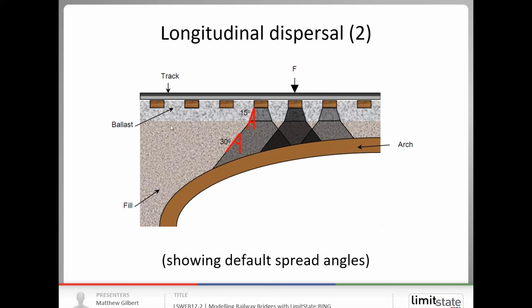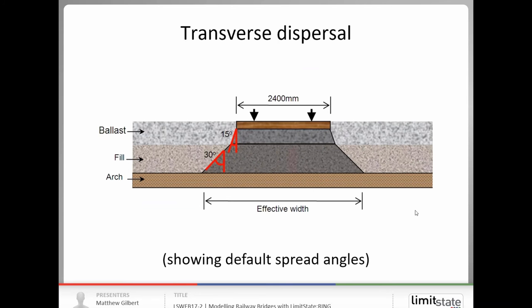In terms of what happens below the sleeper level, then we have dispersion through the surface fill, which is ballast in the case of a railway, most commonly, and then we can have a different angle of dispersion through the backfill below. And these are the default spread angles. Actually, limit state ring was developed in conjunction with the International Union of Railways, or UIC for short, and these were the values that they recommended that we used as the default parameters. However, quite clearly, many assessment codes will have different values, and you should use the values that you think are appropriate for the context in which you're working in.